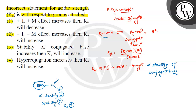So, electron withdrawing groups showing minus-I and minus-M effects, when added to the acid, will increase the Ka value. The second option states that minus-I and minus-M will increase Ka — this statement is correct. Since we are asked for the incorrect statement, this one is not our answer.